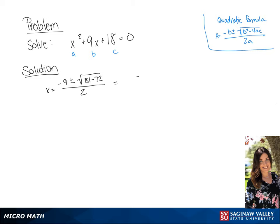If we simplify this, we get negative 9 plus or minus the square root of 9 over 2, giving us negative 9 plus or minus 3 all over 2.